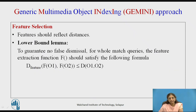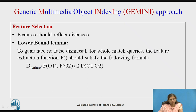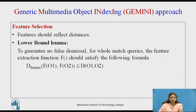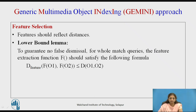When selecting features, only good features are allowed — specifically those following the lower bound lemma. This means the distance between features must be less than or equal to the distance between the actual objects. If a feature satisfies this condition it can be used; otherwise, other features must be considered.